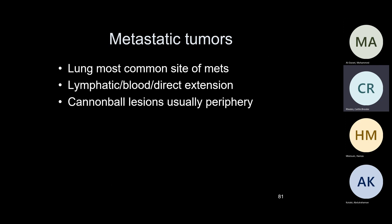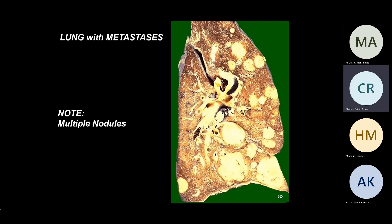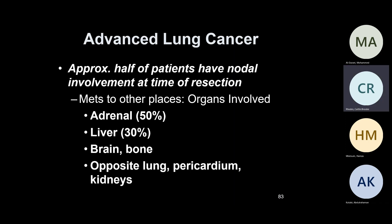Metastatic disease to the lungs is quite common — the lungs are the most common sites. Metastases come via lymphatics, blood, or direct extension from breast cancers, GI tract, pancreatic cancers, and so forth. Advanced lung tumors: adrenal glands are commonly involved, liver can be involved, and bone and brain can be seen as well.